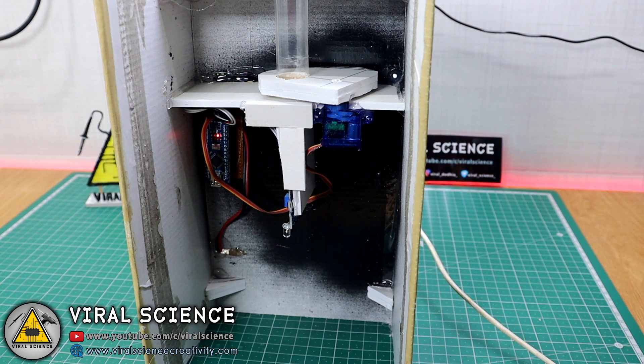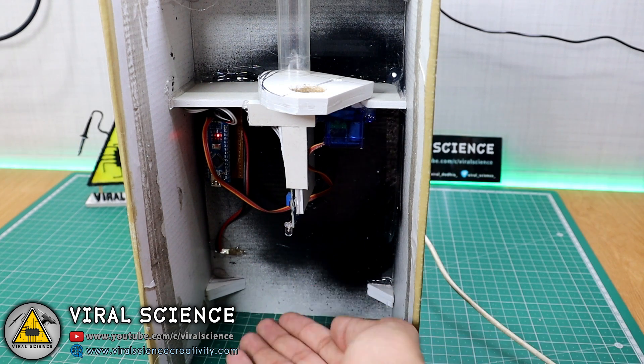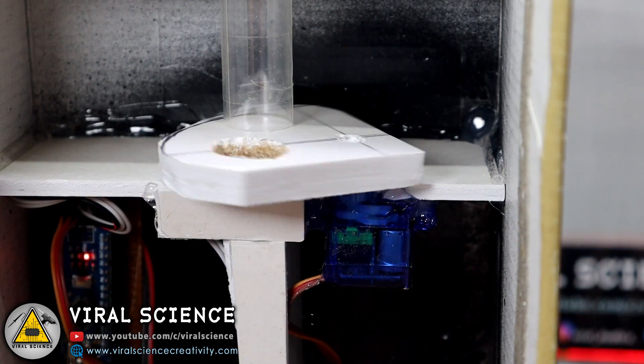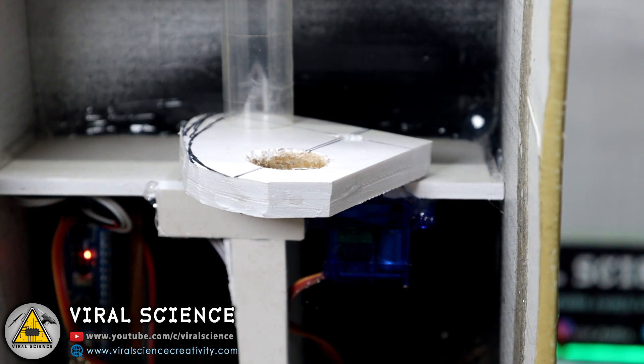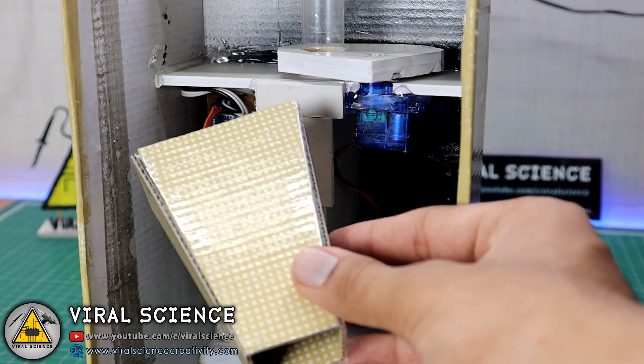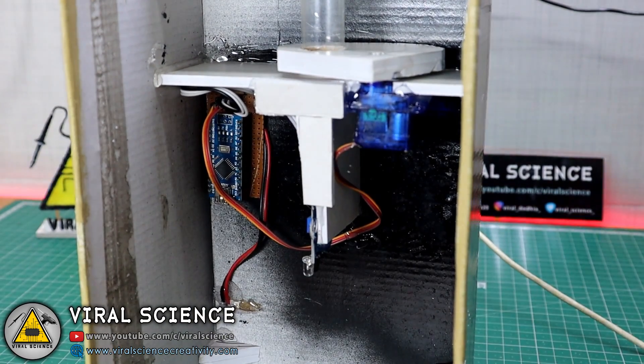So when any object is detected, the servo motor rotates 90 degree and drops one pill at a time. So let's have a close look how it works. I have made this vent from cardboard to drop pill directly in our hand.